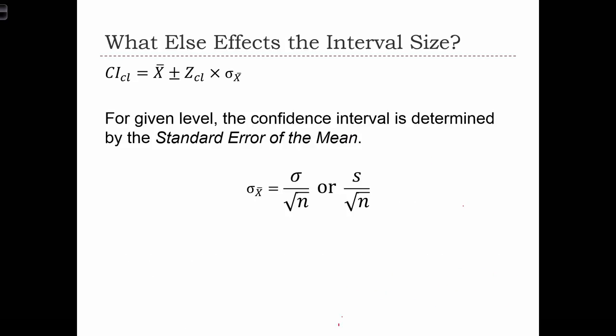What else affects the size of our interval other than the given confidence level? For a given confidence level, the thing that's affecting our confidence interval is the standard error of the mean. We know that the standard error of the mean is equal to s over root n. So in order to have a smaller confidence interval, we need to have a smaller standard error of the mean. And to have a smaller standard error of the mean, one way to do that is to increase our sample size.